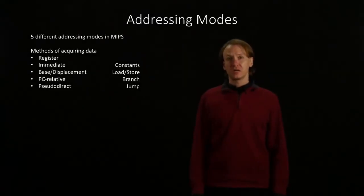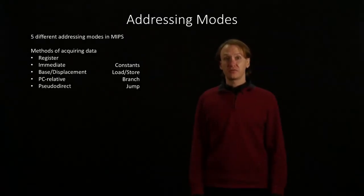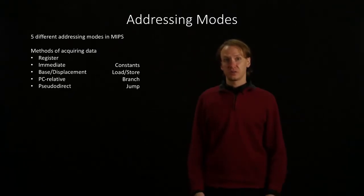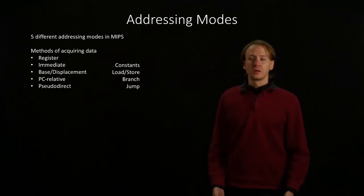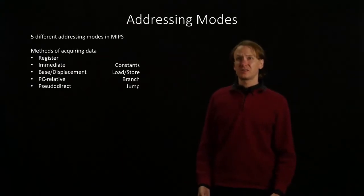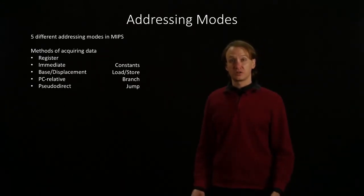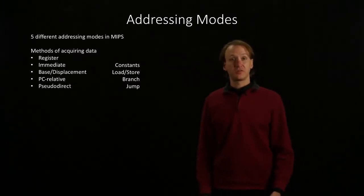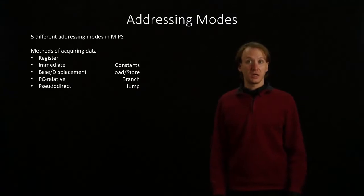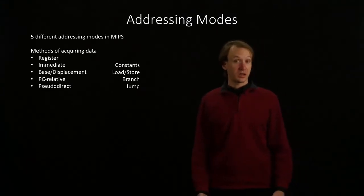The MIPS architecture gives us five different ways of acquiring the data that we're interested in. Each one of these will constitute some form of an addressing mode. The five methods that we have are register addressing, immediate addressing, base addressing — or displacement addressing if you prefer — PC relative addressing, and pseudo direct addressing.